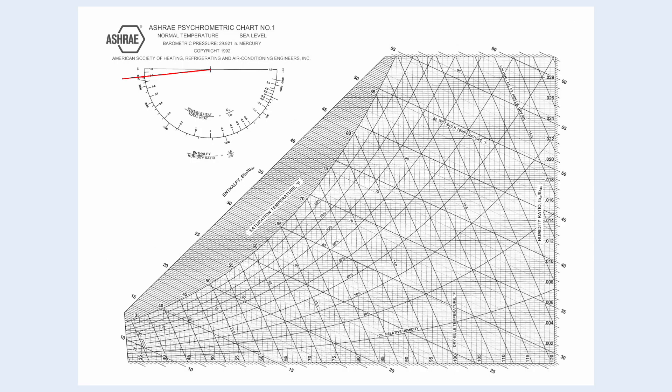Then, at the center of the psychrometric chart, we mark the indoor design temperature at 75 degree Fahrenheit and relative humidity at 50%. For comfort cooling, the acceptable relative humidity is between 40 to 60%. For now, we set at 50%.